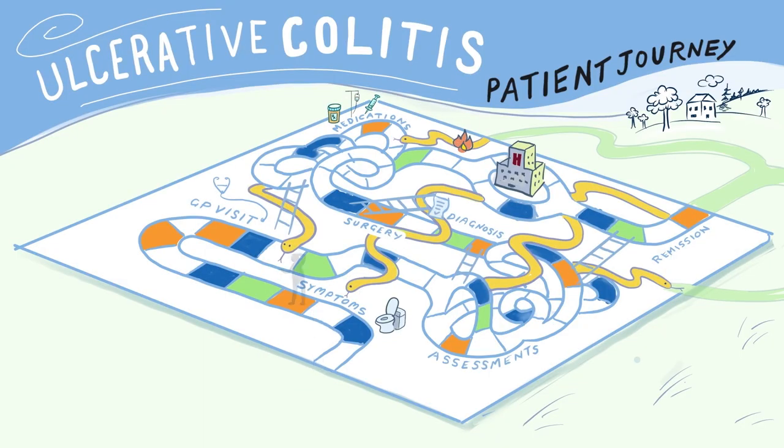Even with all of these treatment options, new symptoms might appear, severity might increase or decrease, so changes might need to be made to medications, or new assessments are needed. It can be a network of snakes and ladders.